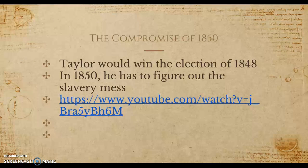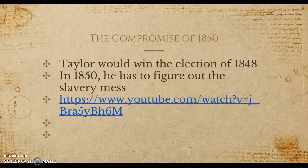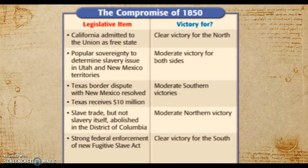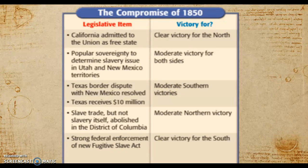This all led to the Compromise of 1850. Zachary Taylor won the election, and in 1850 he had to figure out the slavery mess. Ultimately, the Compromise of 1850 admitted California as a free state, established popular sovereignty in Utah and New Mexico, resolved the Texas border dispute, and abolished the slave trade in the District of Columbia.